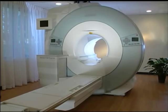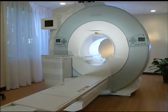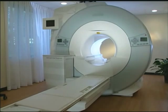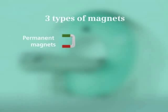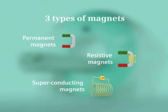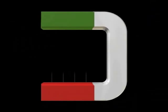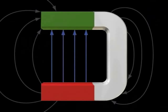Now let's take a look at the core of the MR system — the magnet. There are three types of magnets used in clinical imaging: permanent magnets, resistive magnets, and superconducting magnets. Permanent magnets always have a magnetic field. In case of an emergency, a permanent magnet cannot be switched off. They do not require an external energy supply and can only reach limited field strengths.